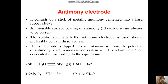The next electrode is the antimony electrode. It consists of a stick of metallic antimony cemented into a hard rubber sleeve, and an invisible surface coating of antimony oxide is always present. The solution in which the antimony electrode is used should preferably contain dissolved air. When dipped into an unknown solution, the potential of the antimony/antimony oxide system depends on hydrogen ion concentration according to a specific equilibrium.